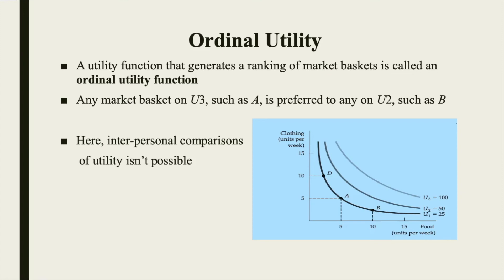The ordinal utility function determines the satisfaction of a commodity used by an individual which is supported by a numeric value. These numerical values can also be doubled or tripled based on various utility functions while only preserving their order. The ordinal utility theory claims that it is only meaningful to ask which option is better than the other, but it is meaningless to ask how much better it is or how good it is.